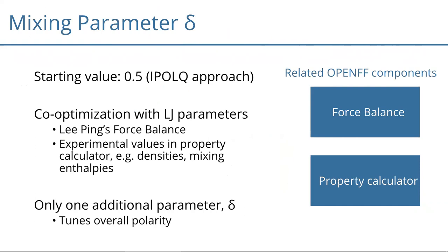Regarding the mixing parameter delta, we want to use 0.5 as a starting value — there is some physical justification for that, and it's also the IPOLQ approach. We will then co-optimize this mixing parameter together with the Lennard-Jones parameters using Force Balance and all the experimental data accessible through the property calculator. The nice thing is that we're only introducing one additional parameter in the optimization, but we can use it to tune the polarity of our force field.